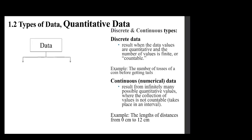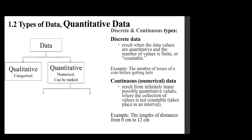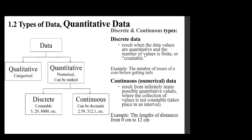Discrete data result when the data values are quantitative and the number of values is finite or countable. And there's an example: the number of tosses of a coin before getting tails. Continuous or numerical data result from infinitely many possible quantitative values where the collection of values is not countable. It takes place in an interval. For example, the lengths of distances from 0 centimeters to 12 centimeters. In short, discrete means countable and continuous takes place in an interval. So we have qualitative and quantitative. Quantitative is either discrete or continuous.